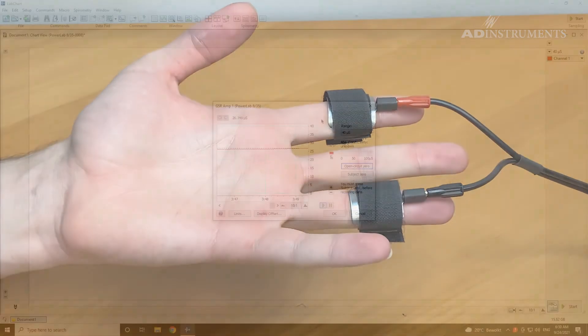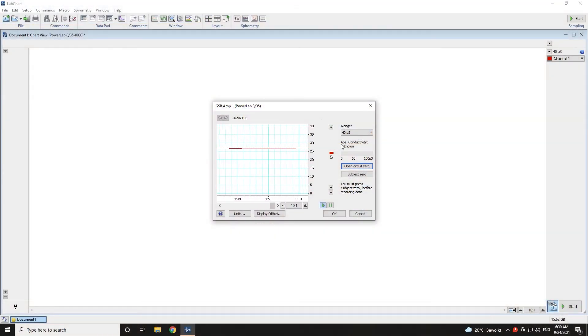After the electrodes have been allowed to equilibrate for a couple of minutes, click on subject zero to zero the signal for this particular subject.